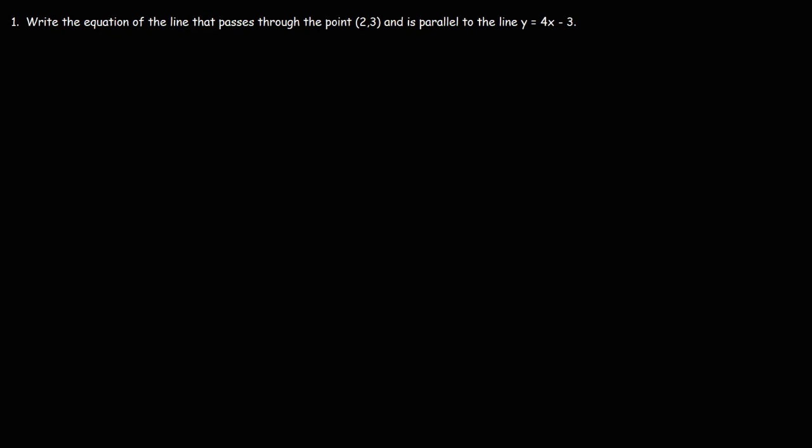Write the equation of the line that passes through the point (2, 3) and is parallel to the line y equals 4x minus 3. In order to write the equation of the line, we need at least two things: the slope and the point. We already have the point, so all we need to do is find the slope.